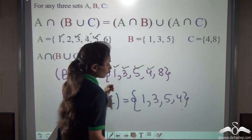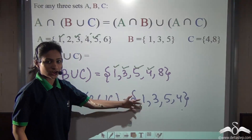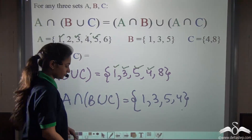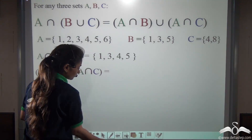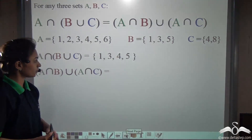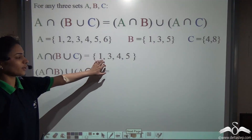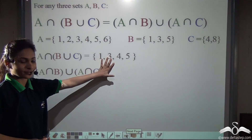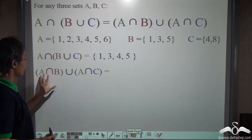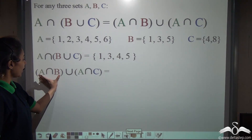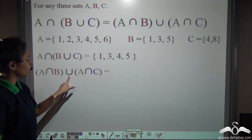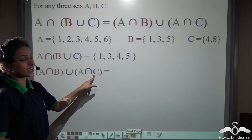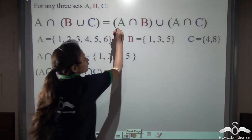You can arrange this in any order. Here we get 1, 3, 4 and 5. Now find (A intersection B) union (A intersection C) — this part.